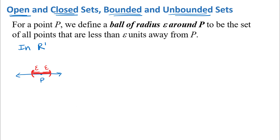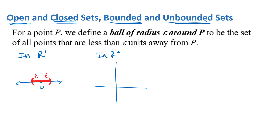So we're really looking at all the points inside that interval. It doesn't look much like a ball, but it's a little interval epsilon units away from P. In R2, we're in an xy coordinate system, so P has an x and y coordinate, and going epsilon units away in all directions gives us a circle of radius epsilon. The points less than epsilon units away from P are all the points inside that circle.